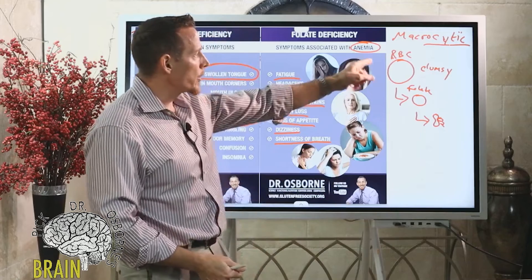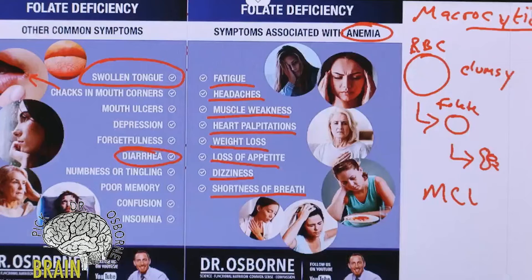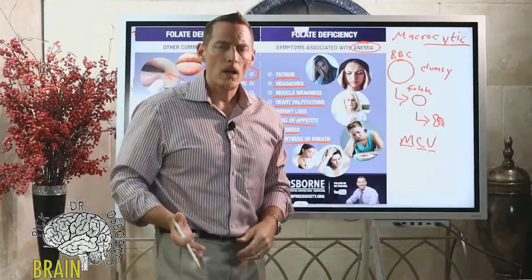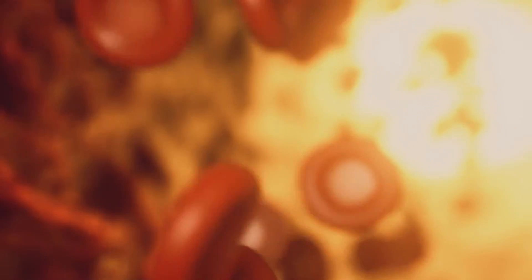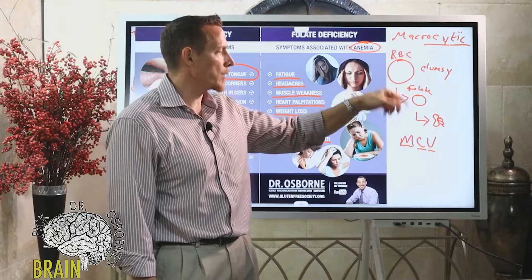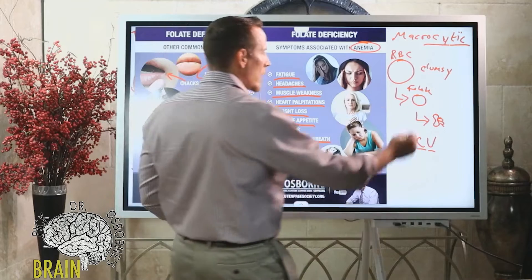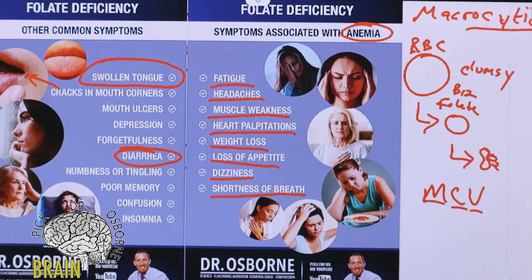One test you can ask your doctor to run is called MCV — Mean Corpuscular Volume. It's part of a standard blood test that helps you understand whether your red blood cells are too large. If your MCV value is high, it indicates your red blood cells are large and stuck in that clumsy state — a potential indicator of folate deficiency, although it could also be vitamin B12, so you have to be careful.